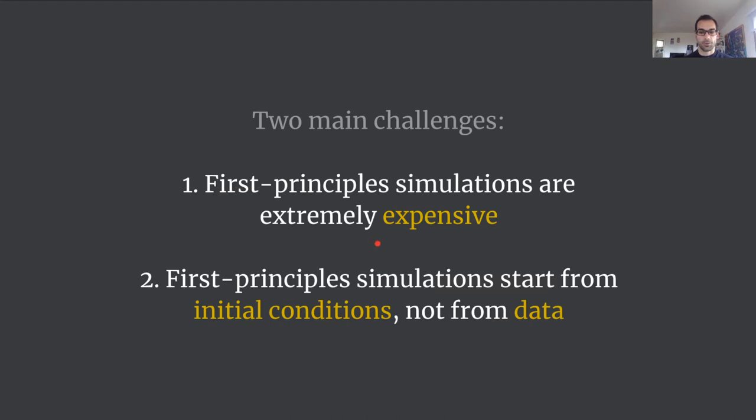First, regarding the structure, it's very difficult to obtain. The reason is that first-principles simulations based on physics are extremely expensive. The ones I mentioned took months to perform on supercomputers. Secondly, first-principles simulations start from initial conditions like a diffuse distribution of the gas rather than from actual observed data. So they cannot actually give you a reconstruction that fits today's data, the galaxy positions themselves.